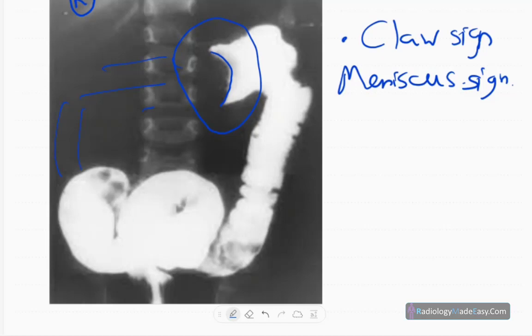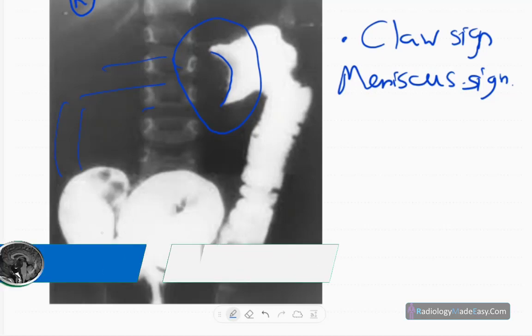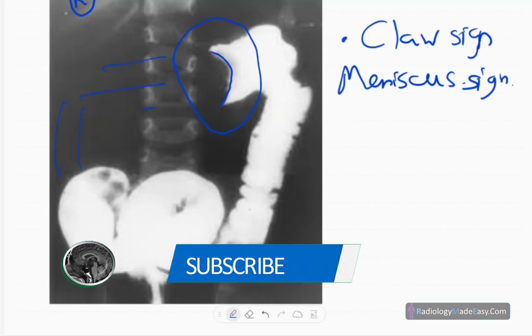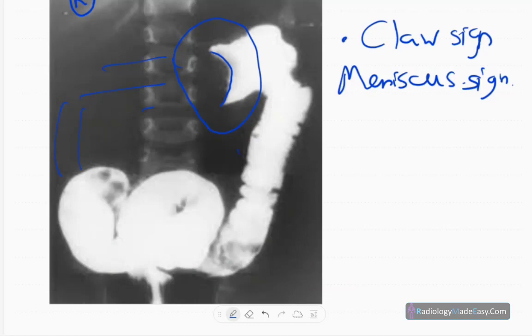The sigmoid colon, rectum, and descending colon are normal. Normal haustral pattern is also there, and no significant dilatation of these distal bowel loops. You don't see any free contrast within the peritoneal cavity. Visualized bones are also normal, with no abnormal fistula tracks.